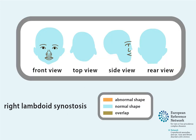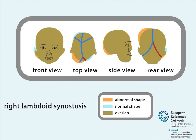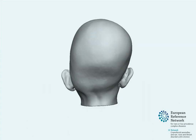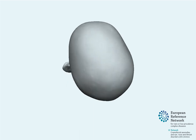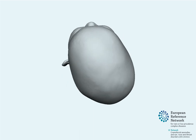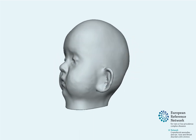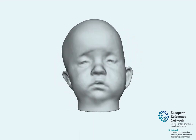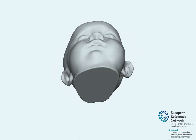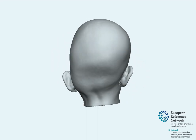In conclusion, unilambdoid synostosis is characterized by the downward position of the ear and flattening of the back of the head at the affected side. This is compensated by occipital bossing on the opposite side, as seen in the 3D image in the video.